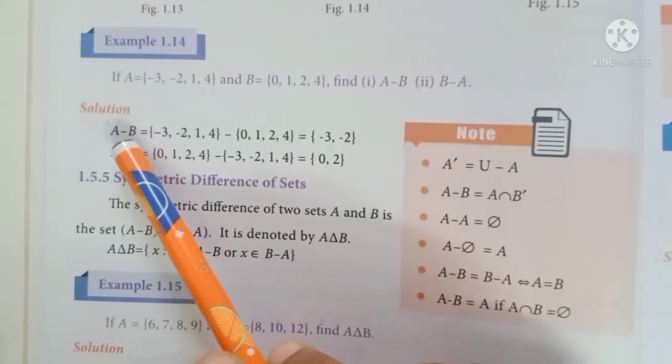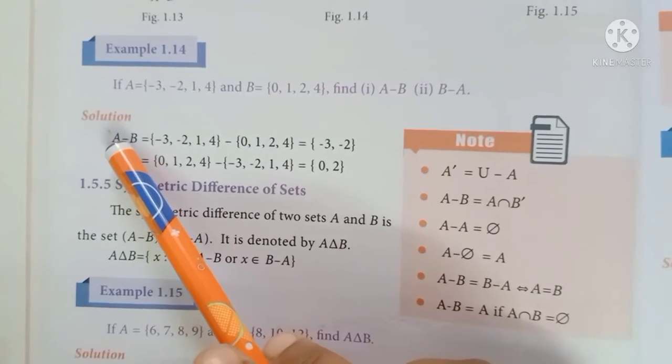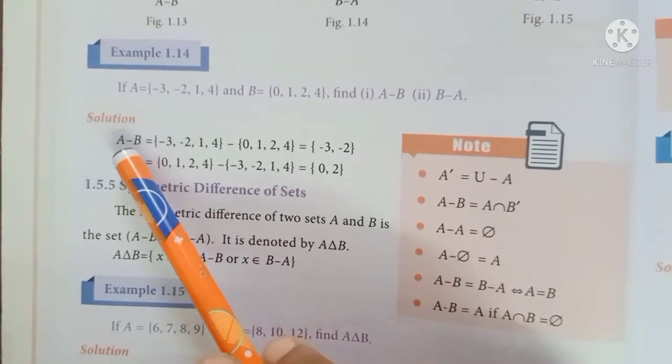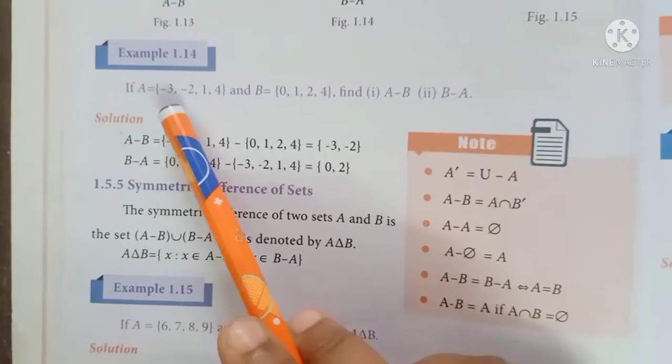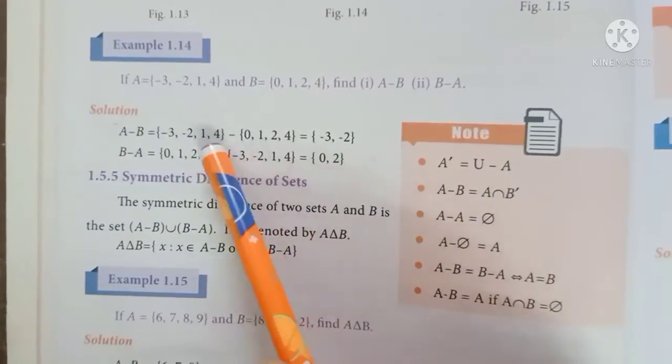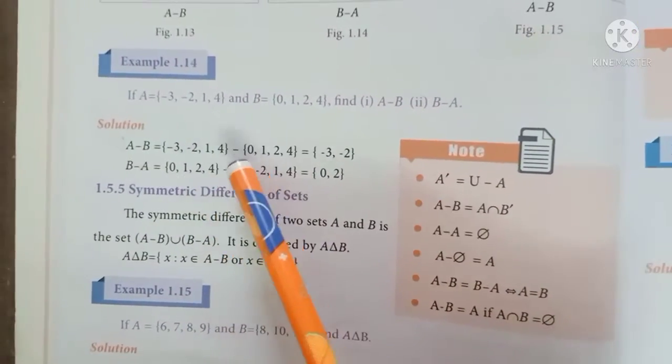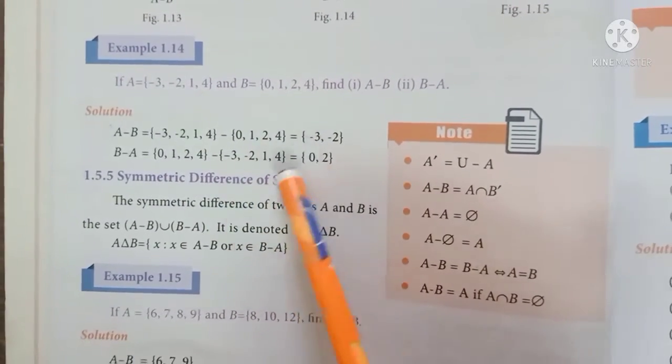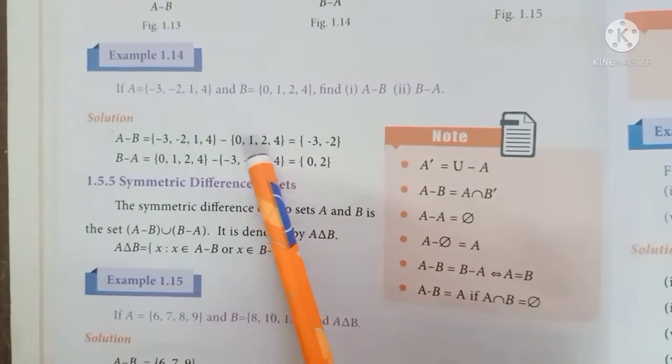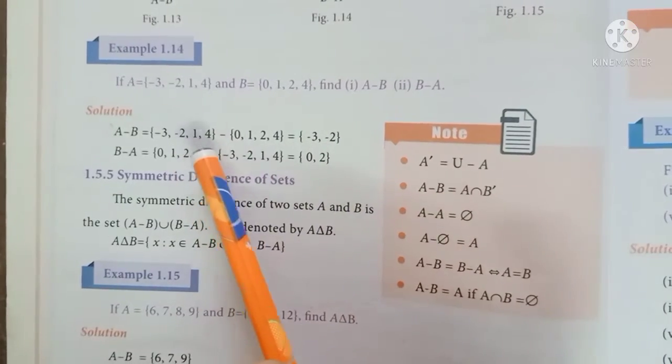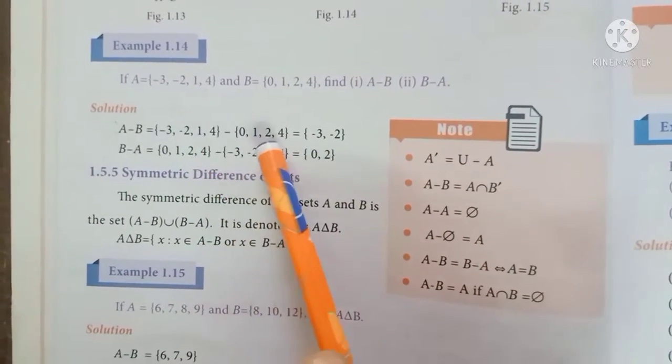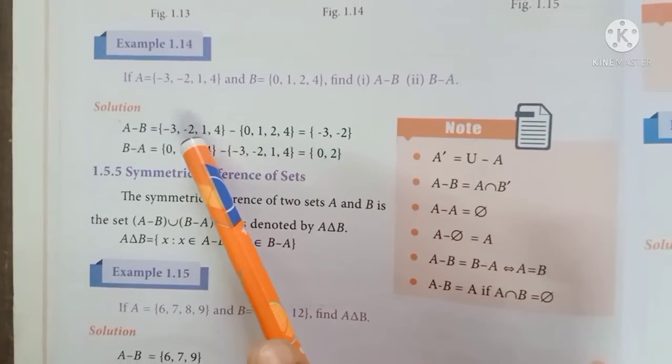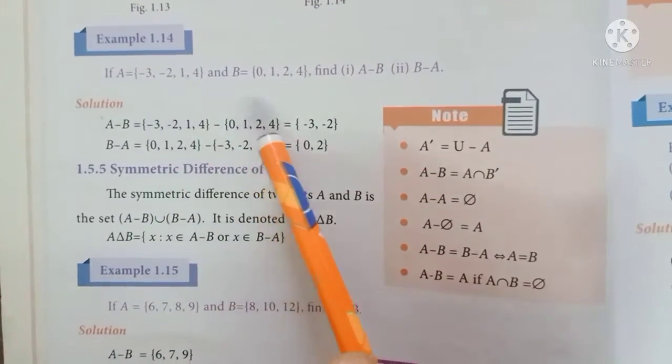For set difference, we look at the first set and remove elements that are in the second set. For example, A-B: we look at A and remove elements that are in B. -3 is in A but not in B, -2 is in A but not in B, 1 is in both so we remove it, 4 is in both so we remove it. So A-B equals {-3, -2}.